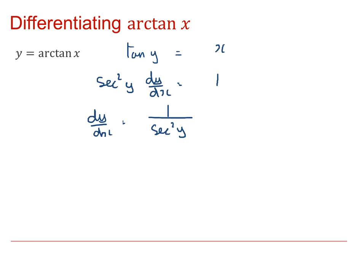But there's a trigonometric identity for sec squared. Sec squared is 1 plus tan squared, so this can be written as 1 over 1 plus tan squared of y. But from above, tan y is equal to x, and therefore tan squared must be x squared. So we get that the derivative is 1 over 1 plus x squared.